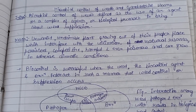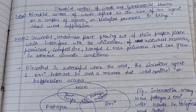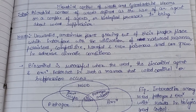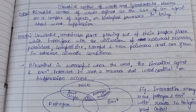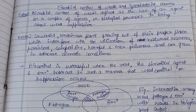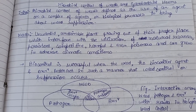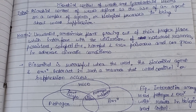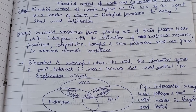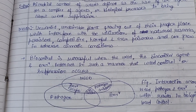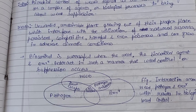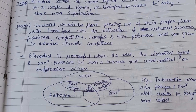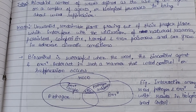By definition, microbial control of weeds is the process in which an agent or a complex of agents — that is, living microorganisms or the biological processes performed by those microorganisms to sustain their life — is used to bring about weed suppression. Weeds are unwanted, undesirable plants growing out of their proper place.